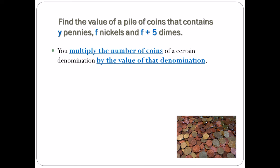I have y pennies—what am I going to multiply y by? That's right, 0.01. Plus what am I going to multiply my nickels by? f times 0.05. And I have f plus five dimes, so we have y times 0.01, f times 0.05, and we have this quantity f plus 5 times 10 cents.